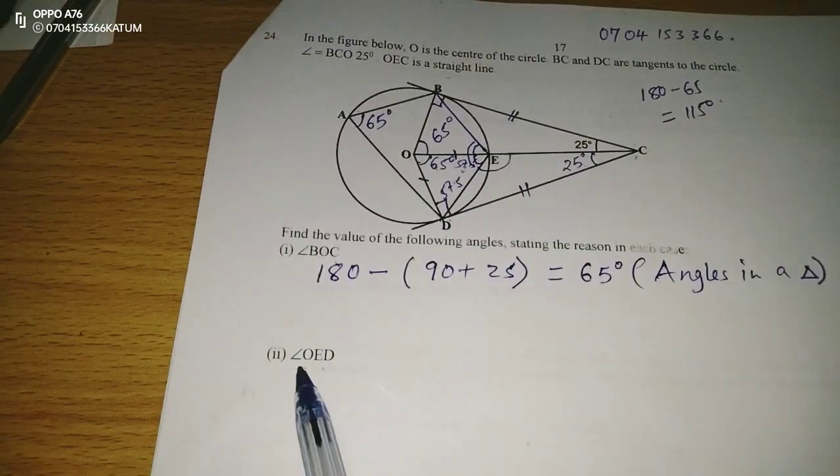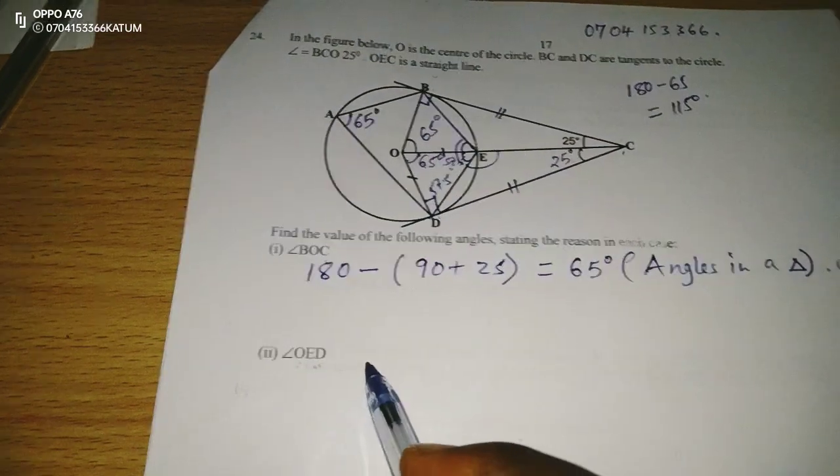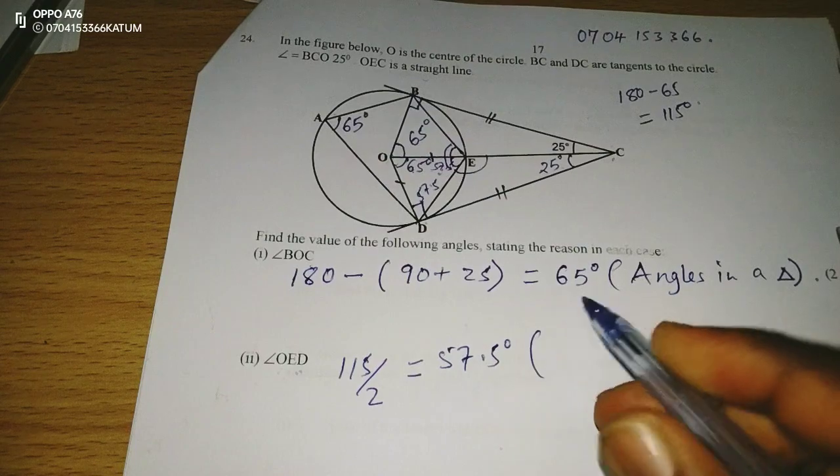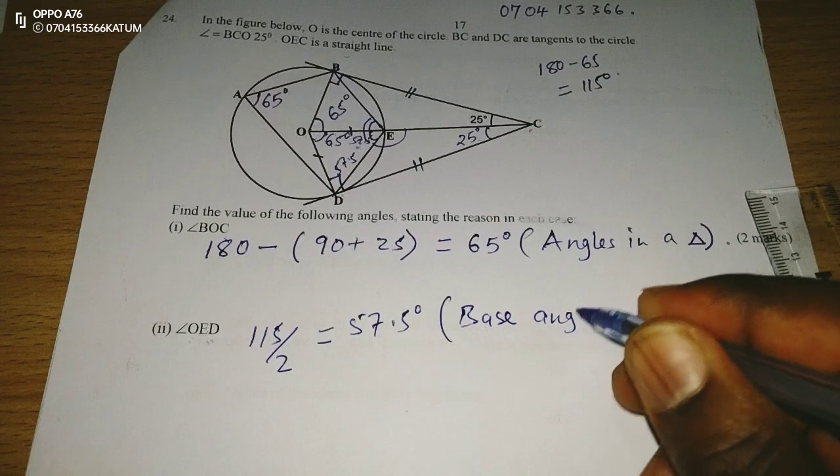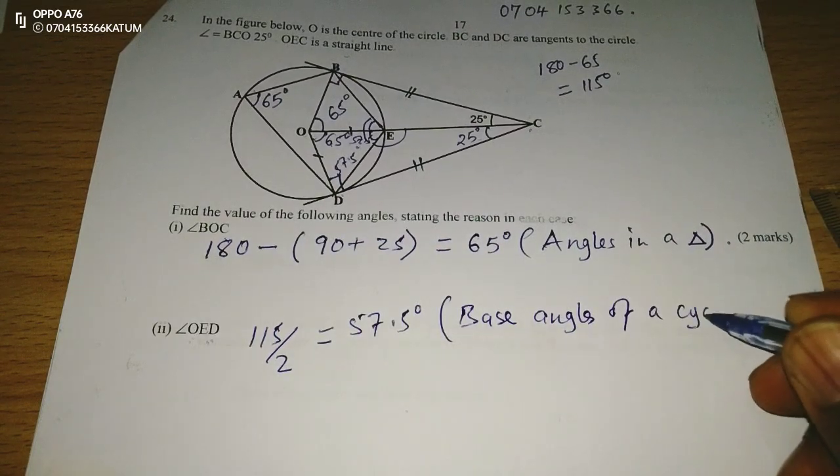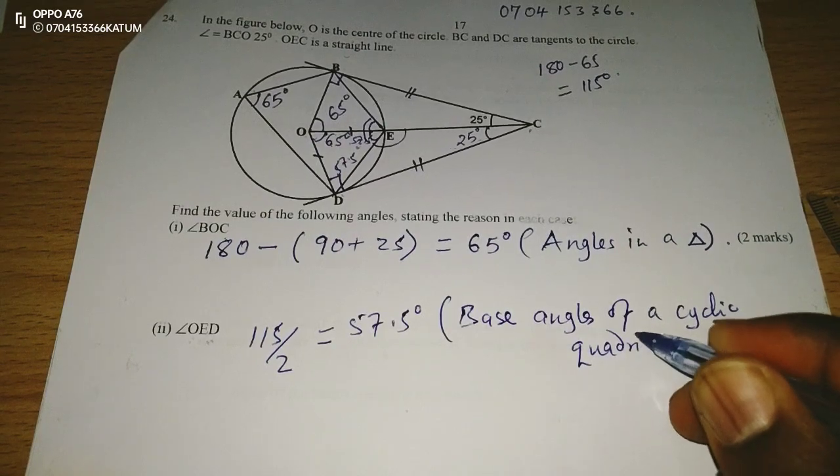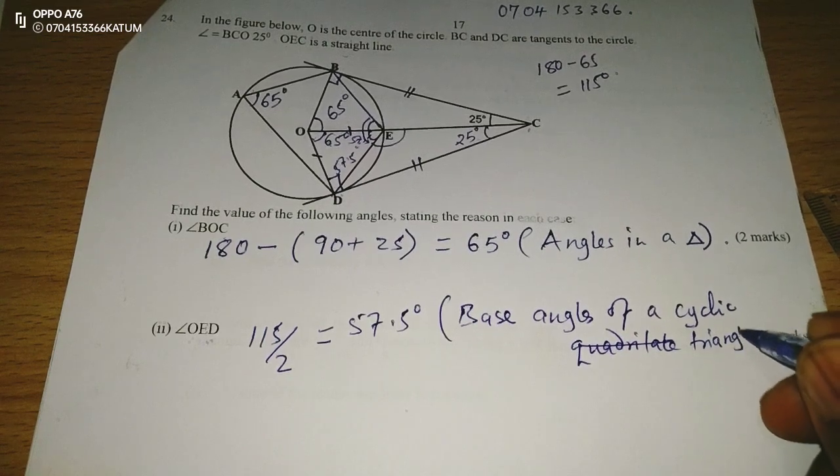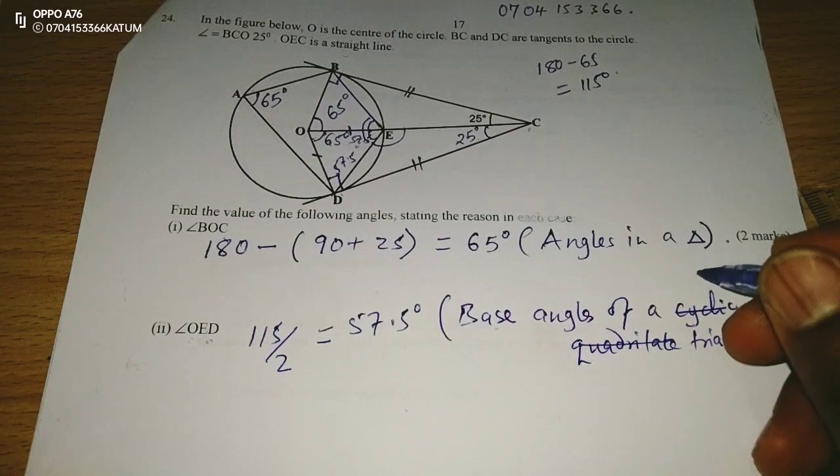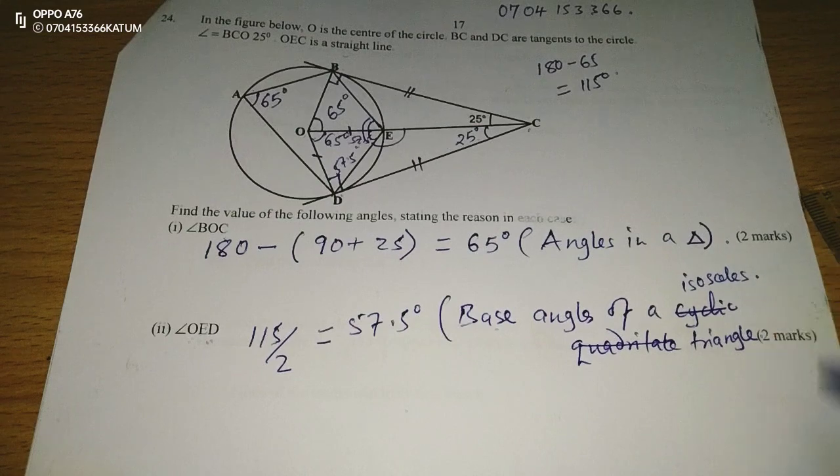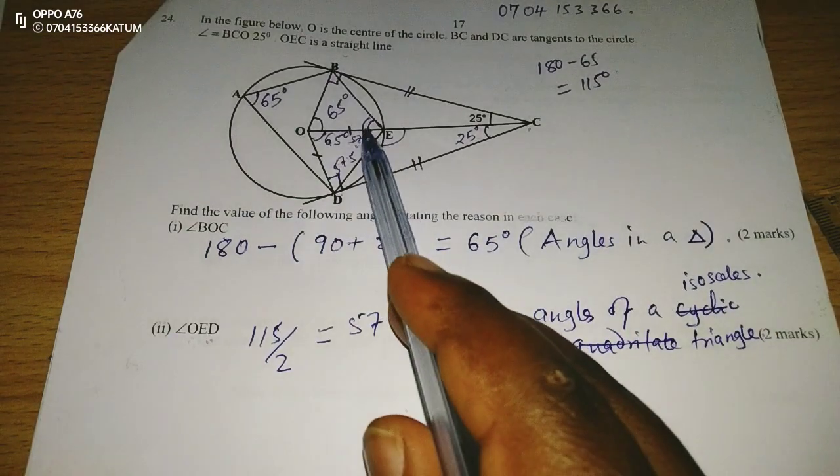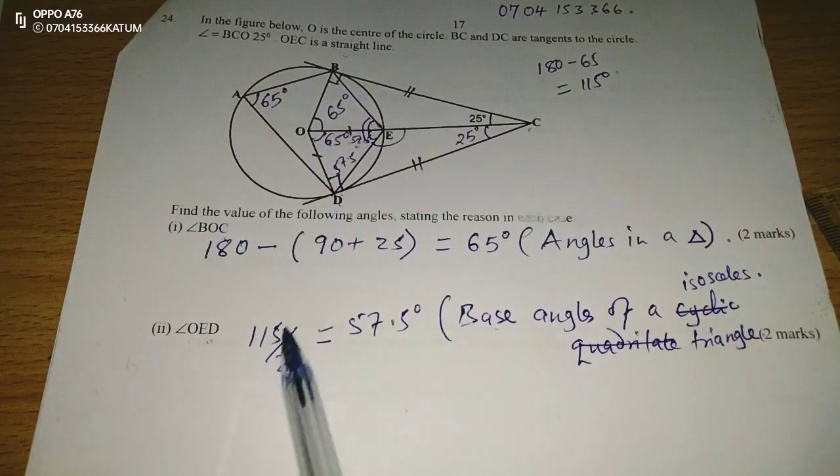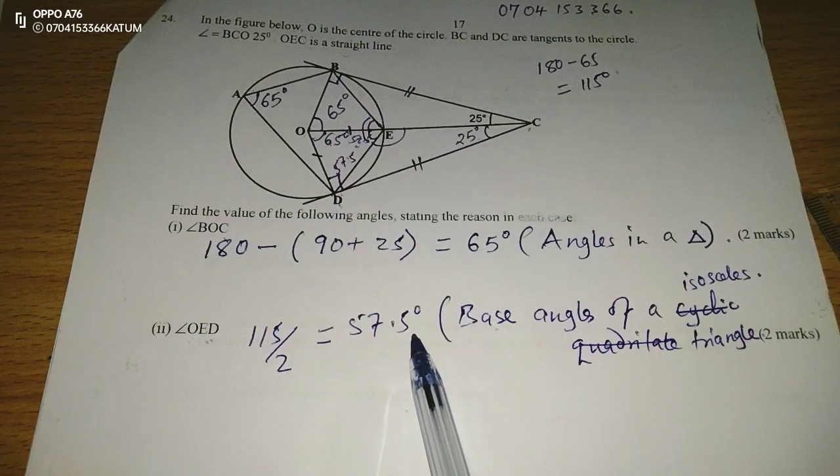But we wanted OED. So the angle OED is going to be 115 divided by 2, giving us 57.5 degrees, base angles of an isosceles triangle. What you should know is that triangle OED is isosceles. Two sides are equal, so the base angles are supposed to be equal. And that is why we are dividing the balance here from 180 by 2 to get 57.5.